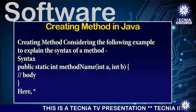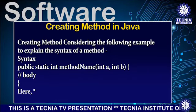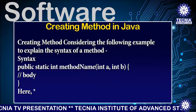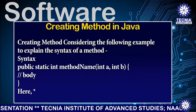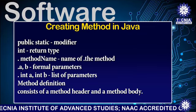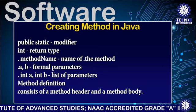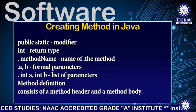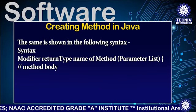Considering the following example to explain the syntax of a method. For example, there is one method 'a' in which two variables are there: integer a and integer b, and there is the body of the method. A method consists of the following parts: method name, return type, parameter, and body of the method. Method definition consists of a method header and a method body, as shown in the following syntax.